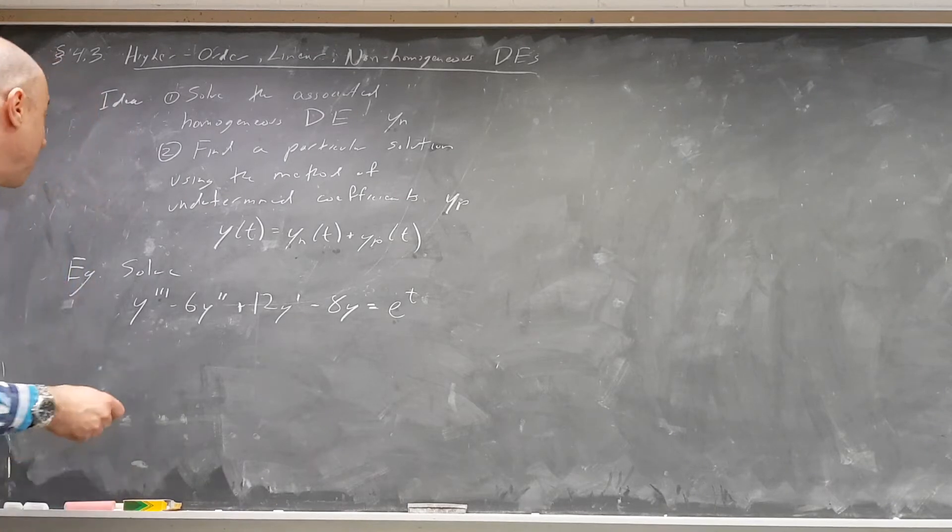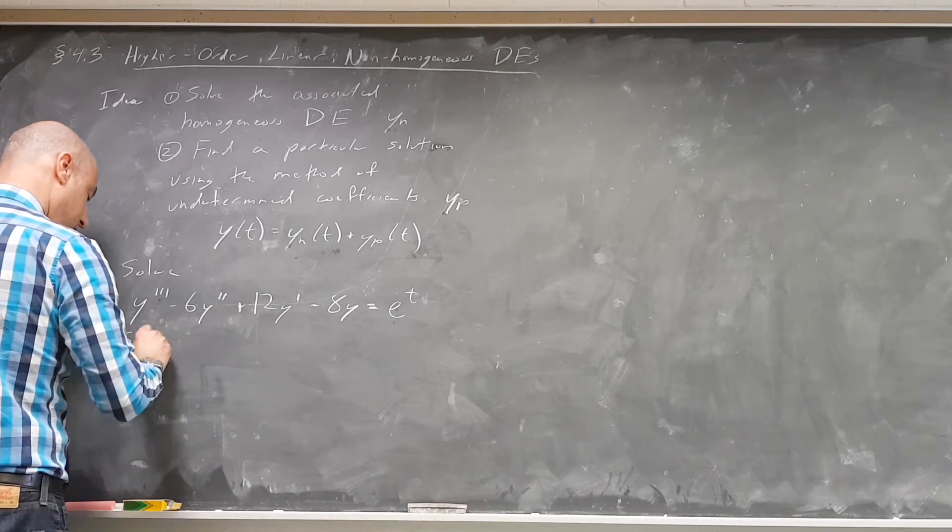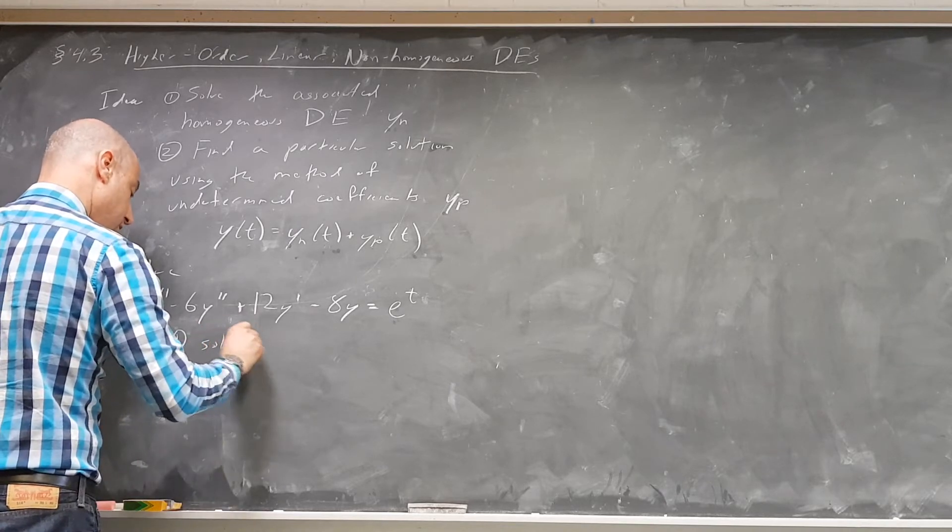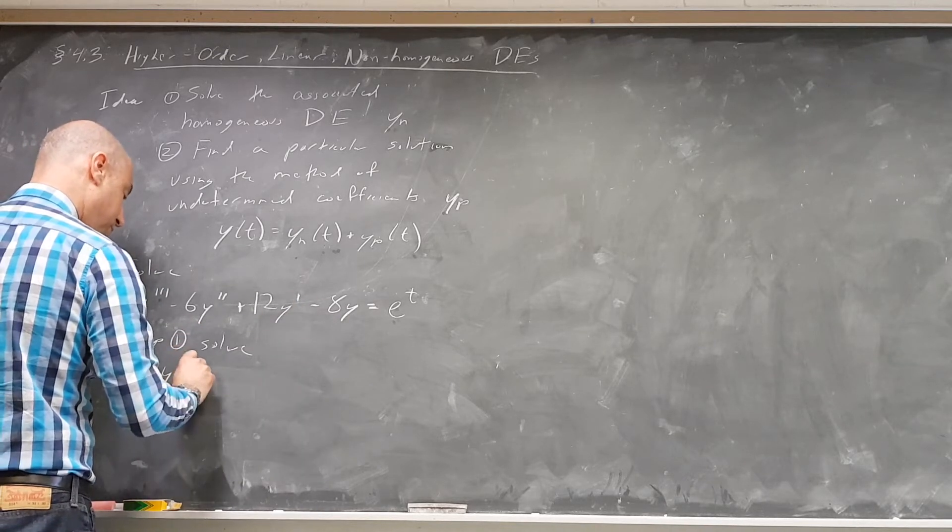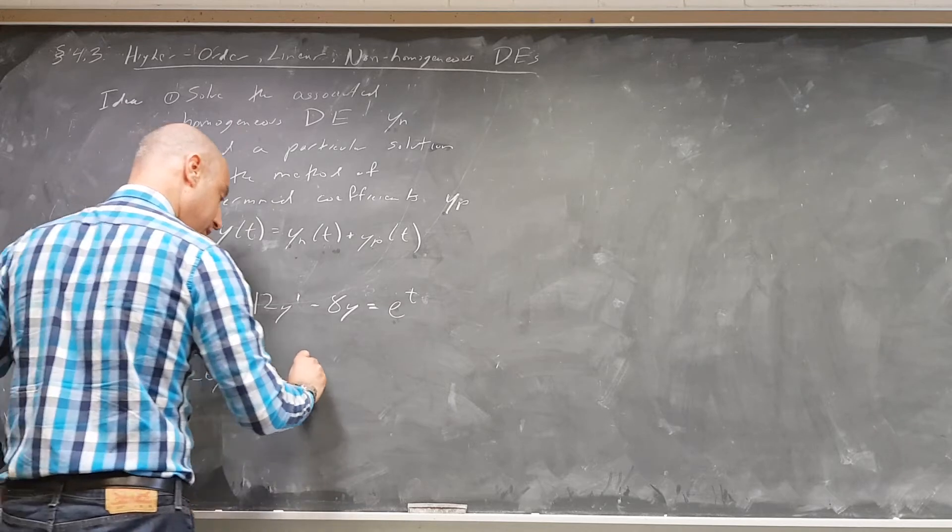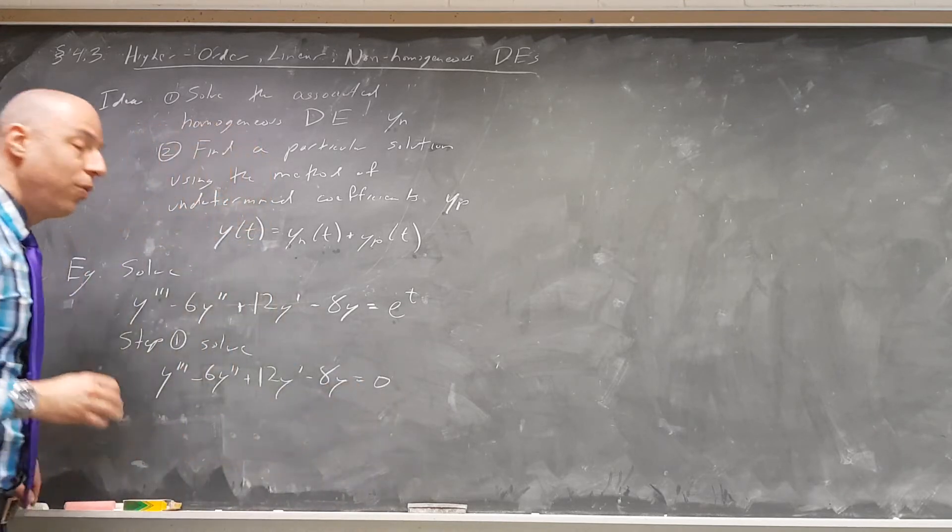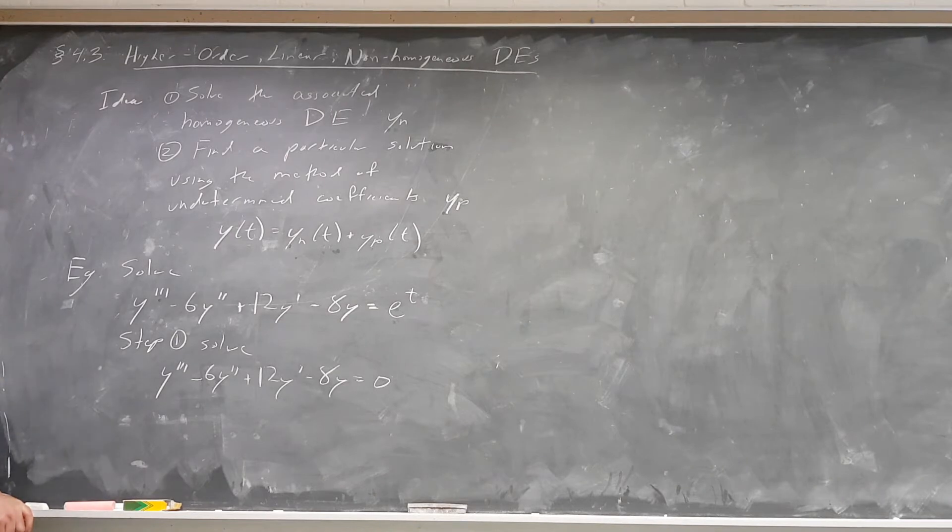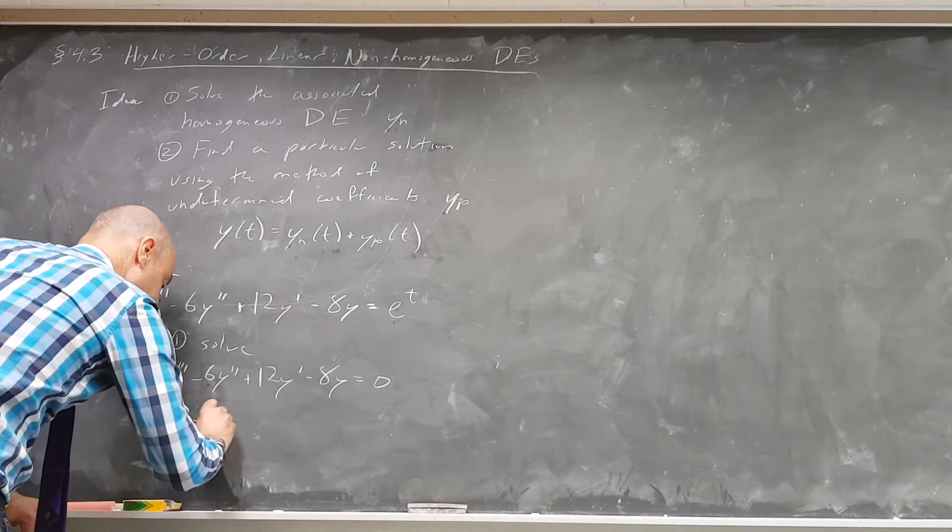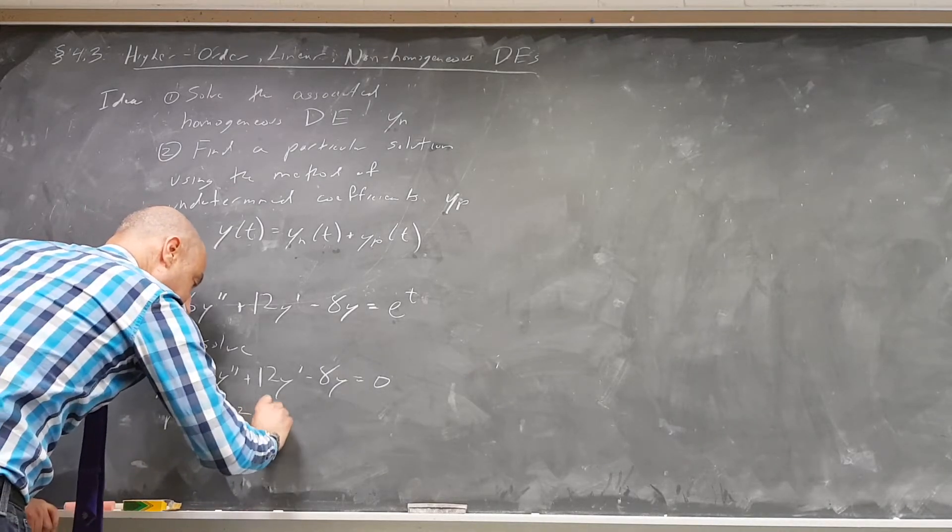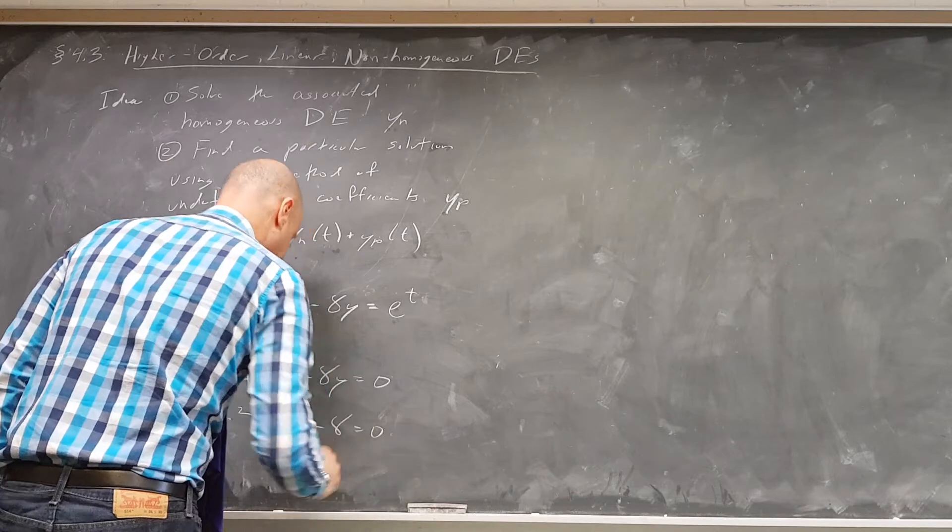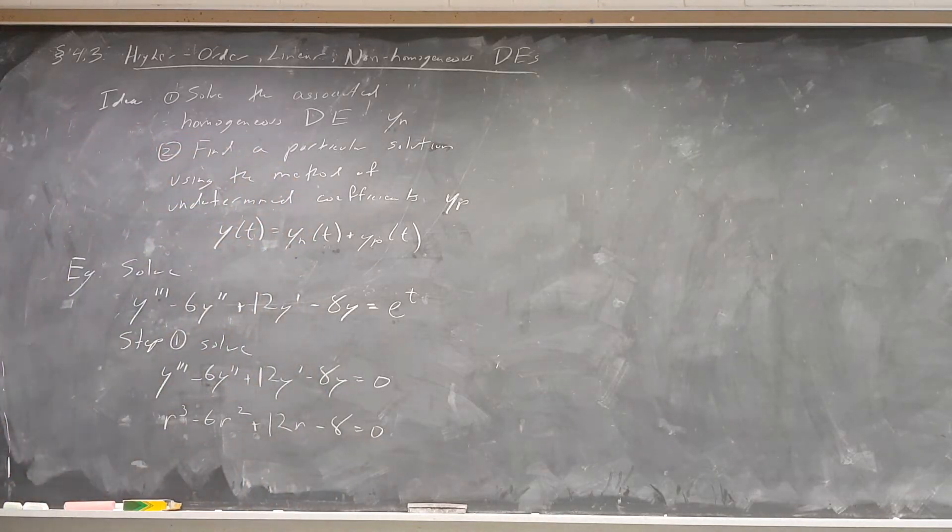So step number one will solve the homogeneous version. So y triple prime minus 6y double prime plus 12y prime minus 8y equals 0. We know exactly how to do that. We're going to write the characteristic polynomial. So r cubed minus 6r squared plus 12r minus 8 equals 0. Now we have to try to factor that thing.